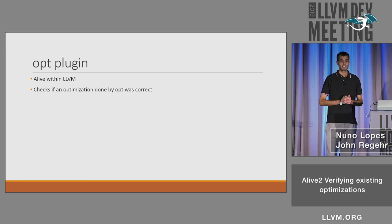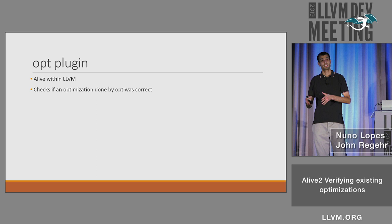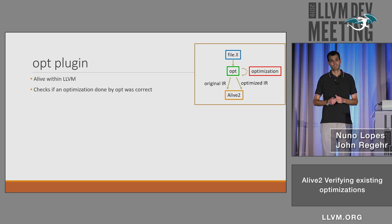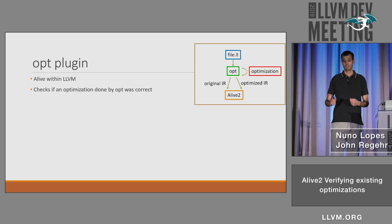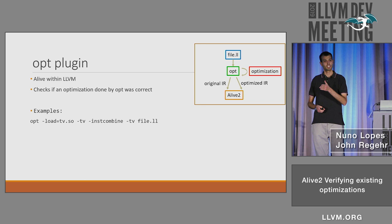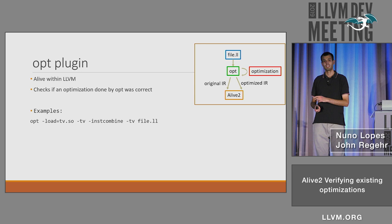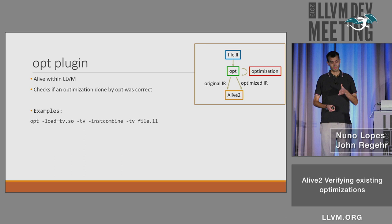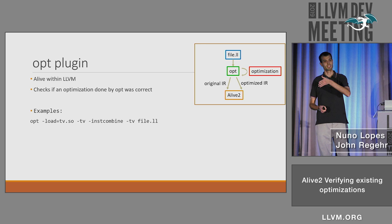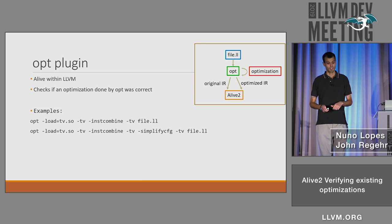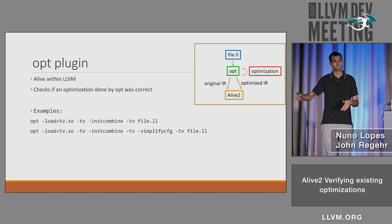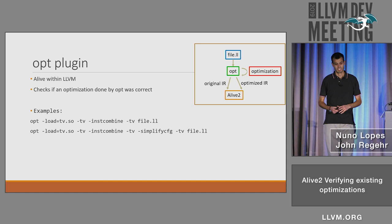How is this useful? We implemented this OPT plugin, which is basically Alive within LLVM. Now you can run OPT and it will tell you whether the optimization was correct. You give some bitcode to OPT, it runs the optimization, and feeds the original and optimized IR to Alive. For example, you can say opt-TV -instcombined -TV and then the file, and Alive will run on that program. The first -TV captures the original IR, and the second -TV captures the optimized IR. To verify multiple optimizations, you can place -TV multiple times, or just at the beginning and end to prove the whole chain was fine.